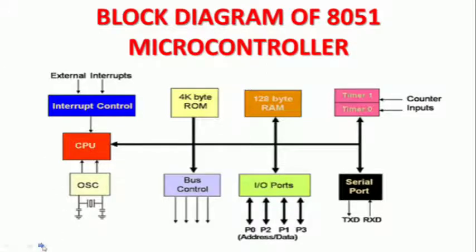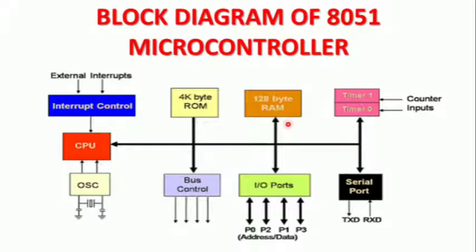Now we have to check the block diagram. Let's check the memory. This is ROM — read-only memory. This is 4KB ROM. This is 4KB read-only memory ROM. This is 128B ROM and this is 4KB ROM.